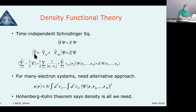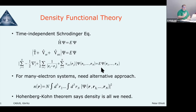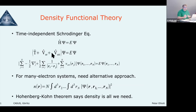The Hamiltonian has three pieces: the kinetic energy of the electrons, the electron-electron interaction, and the external potential from the nuclear ions. The wave function is a function of N electrons in three dimensions, so it scales as 3N — scaling terribly as you increase the number of electrons. The electron-electron interaction makes solving this basically intractable for more than a couple of electrons, so you need to find some other approach.